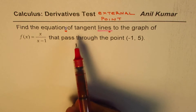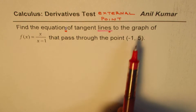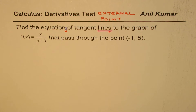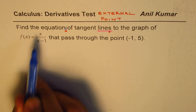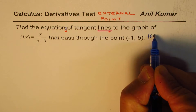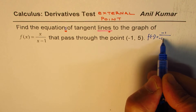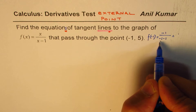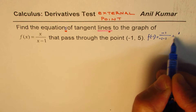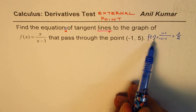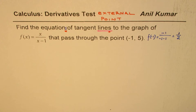Whenever you come across this, you should immediately check if the point is on the curve or not. So let's check: if I find f(-1), it gives me 2(-1) over (-1 minus 1), which is -2 over -2, giving you 1. Wait — actually that is -1 divided by -2, which gives half. So at x = -1, the point on the curve is (-1, 1/2), not (-1, 5). That clearly shows the point is not on the curve — it is an external point.